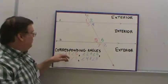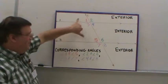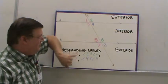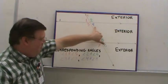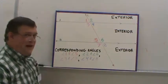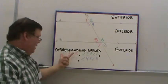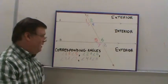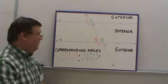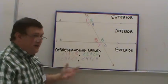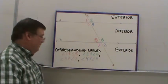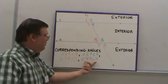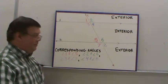Angle one and angle five are corresponding; angle two and angle six are corresponding; four and eight; three and seven. Angle one is going to be equal to angle five, angle two is going to be equal to angle six, but angle one and two are not necessarily going to be equal. Angle three and seven are going to be equal; angle four and eight are going to be equal.